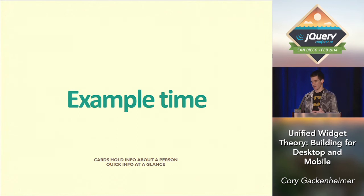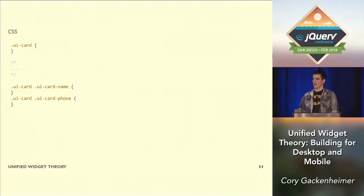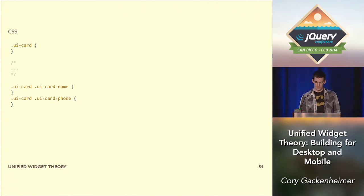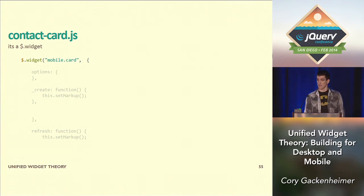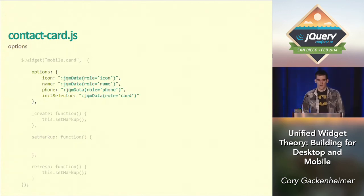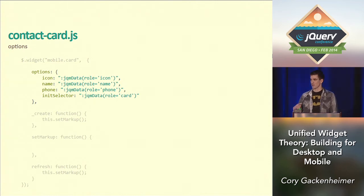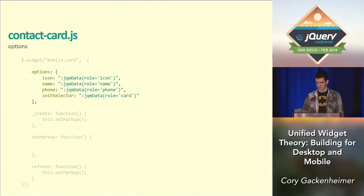Here's an example — a contact card widget that's going to work on both UI and mobile-based apps. First is some CSS using the same paradigm as jQuery UI and jQuery mobile. Then we build our widget — I'm calling it 'mobile card', which gives it the name 'card'. The default options include special selectors to pull out certain parts of the widget: selectors for icon, name, phone, and an init selector of 'card'. Because I named it 'card', the init selector for mobile can actually be omitted.